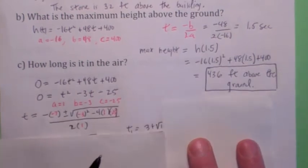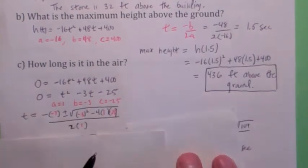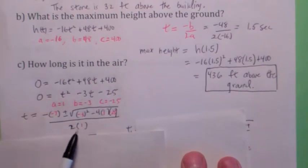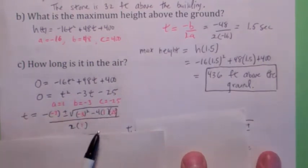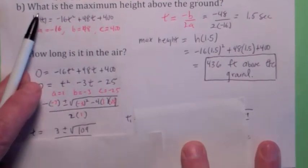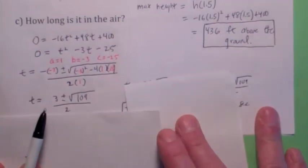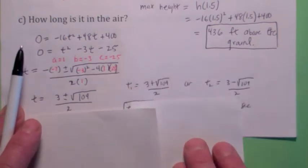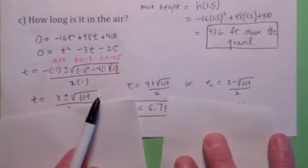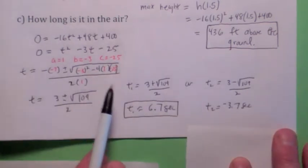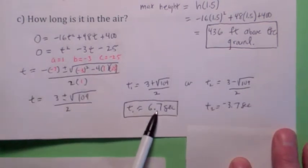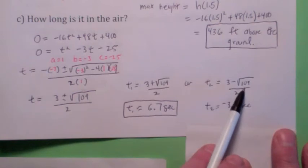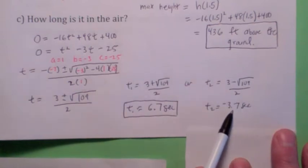Throw this into the quadratic formula. You get a is 1, b is negative 3, c is negative 25. So inside the square root, I think you get 9 plus 100. So you get 109 inside the square root. Anyway, so it's going to have two solutions. However, one of them doesn't really make sense. If you look at 3 plus square root of 109 over 2, that becomes about 6.7 seconds. But if you look at 3 minus square root of 109 over 2, that becomes negative 3.7. So we're going to rule this one out. It doesn't make sense in this problem.